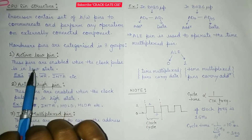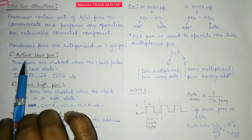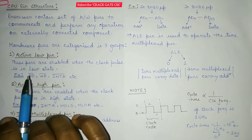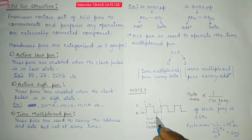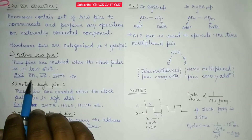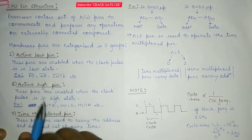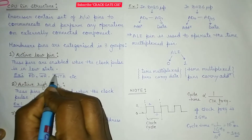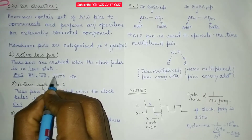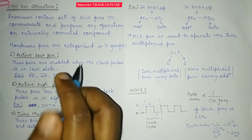Now let's quickly move on to the active low pins. The hardware pins are categorized into three groups. The first one is active low pins — these pins are enabled when the clock pulse is in low state. Zero is known as the low state and one is known as the high state. So when the clock pulse is in zero state, these pins will be activated. For example, read, write, interrupt, INTA. We have a bar on them — the general representation of active low pins is denoted using this bar, showing that these pins are active when the clock pulse is in low state.